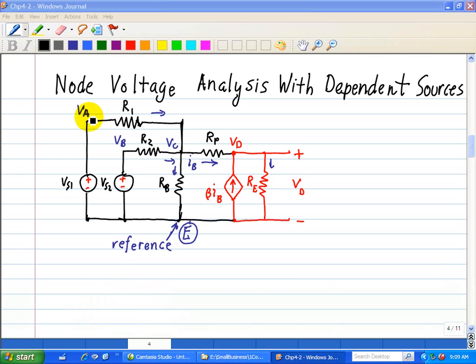Here we have node voltage A, node voltage B, node voltage C, node voltage D, and a ground reference at node E. We also note that at node A the voltage is VS1, and the node voltage at node B is VS2 as shown here.